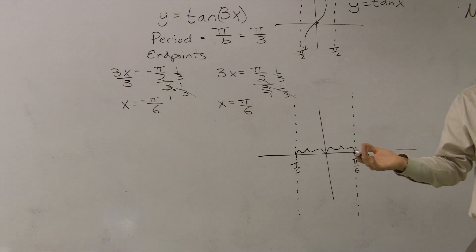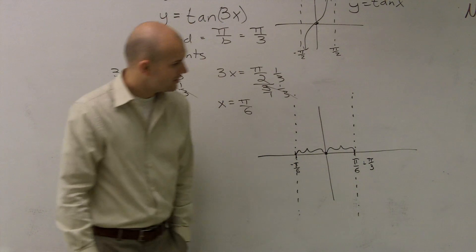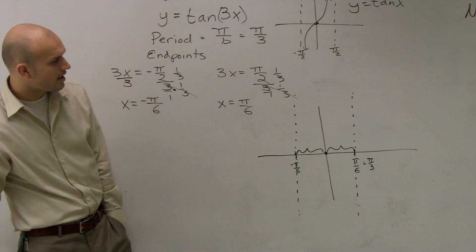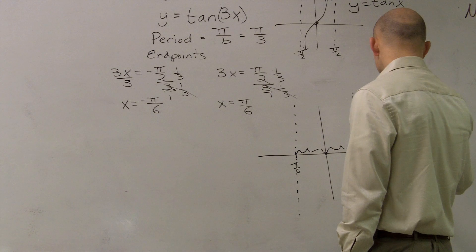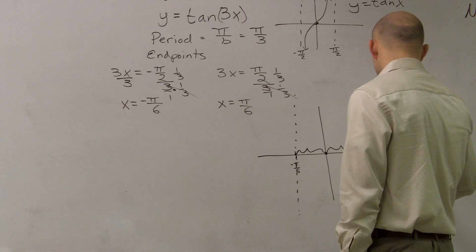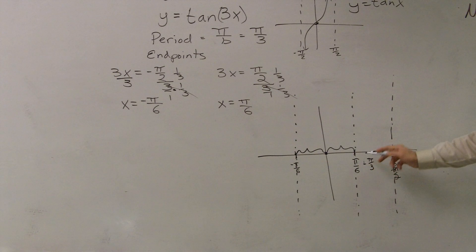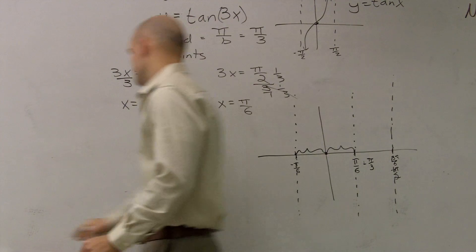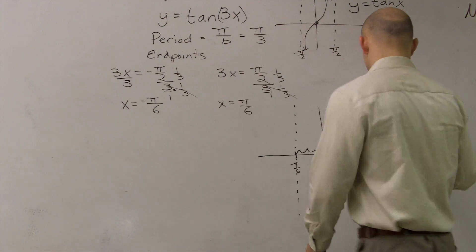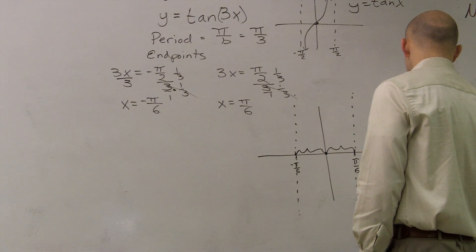To graph another period, if the current asymptote is at π over 6, just add π over 3 to find the next one. So π over 6 plus π over 3 gives us 3π over 6, which reduces to π over 2. That's where I mark the next asymptote.